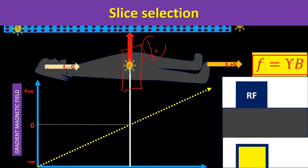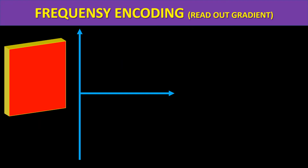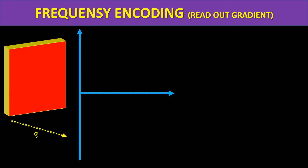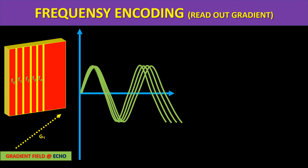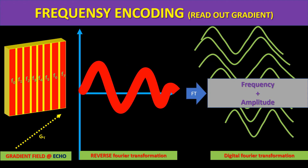Once we get a particular slice, the amplitude reduces. Now after doing frequency encoding and slice selection, we proceed to the next step.